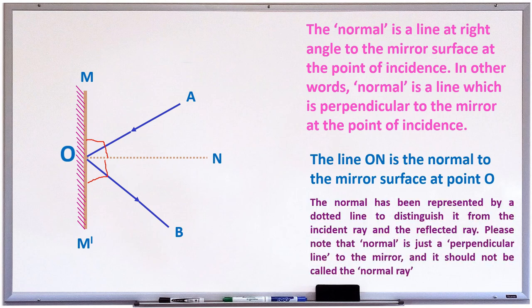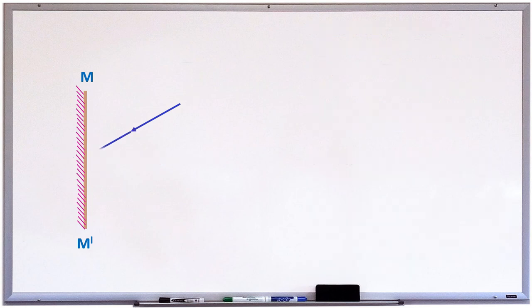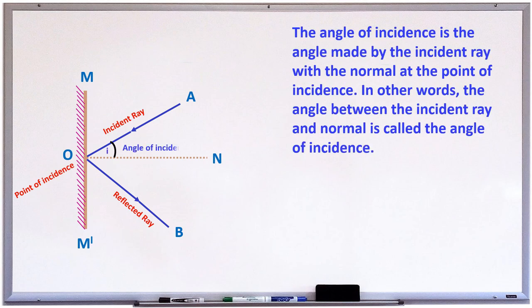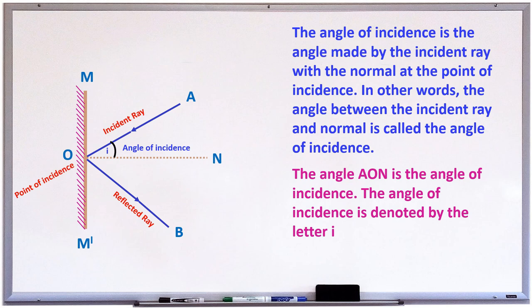The normal has been represented by a dotted line. Observe here, children. Ray OA falls on mirror M-M' and it is reflected; the reflected ray is OB. The angle of incidence is the angle made by the incident ray with the normal at the point of incidence. In other words, the angle between the incident ray and the normal is called the angle of incidence. Here, A-O-N is the angle of incidence, and it is represented by the letter I.